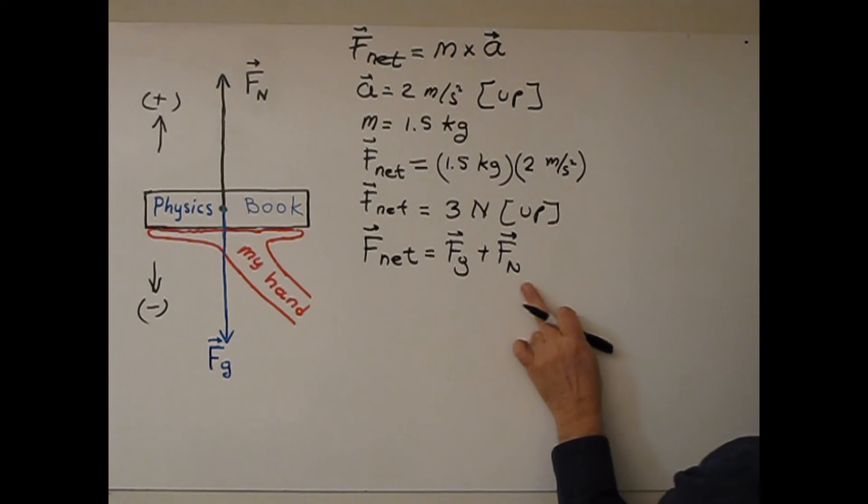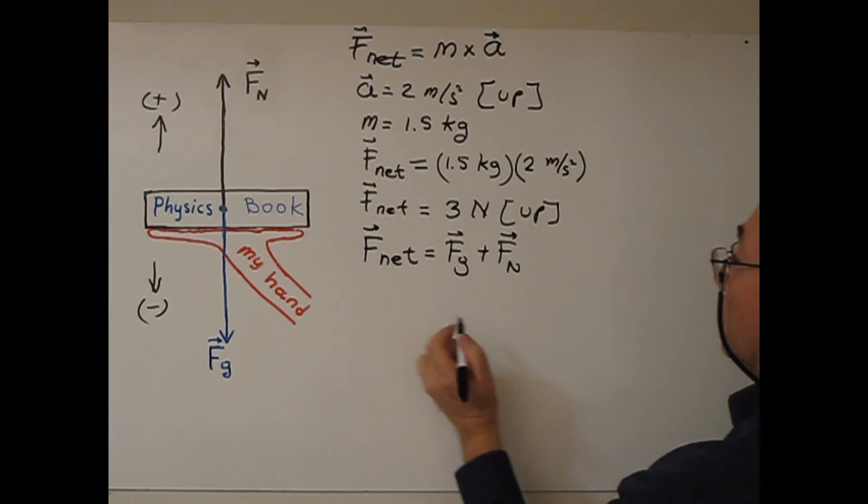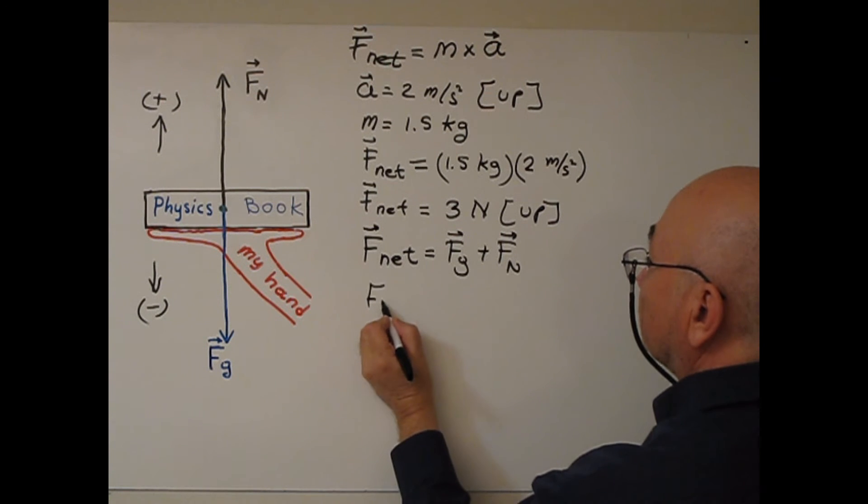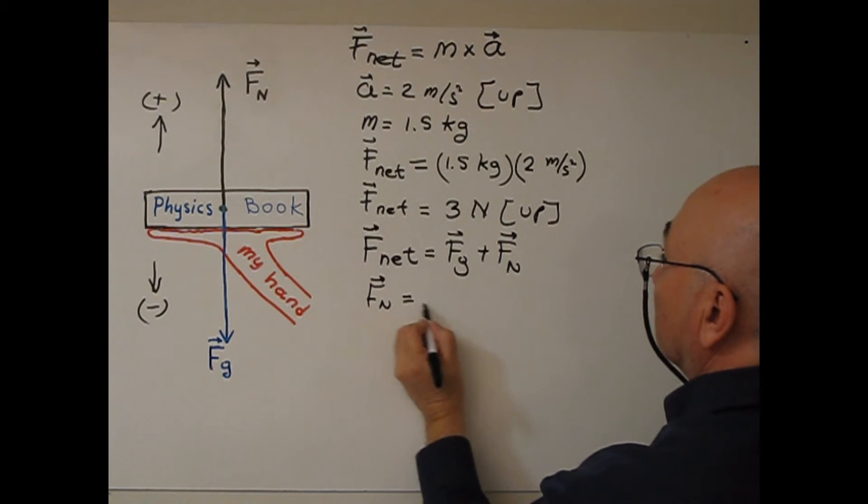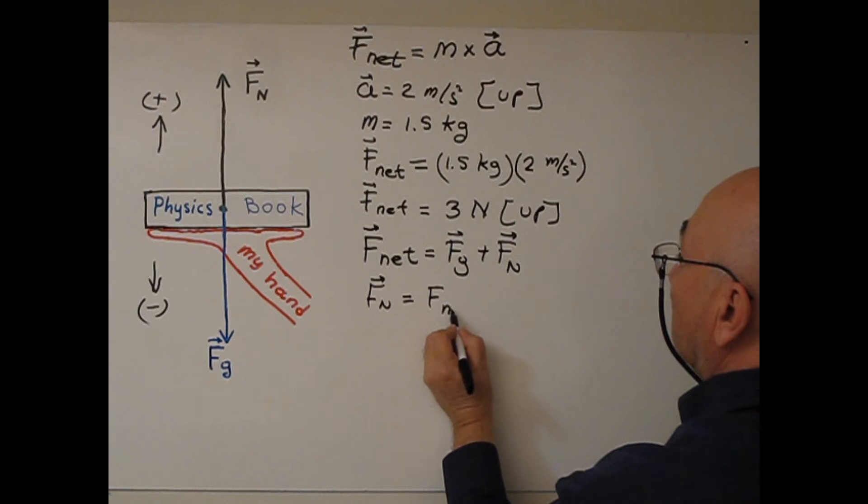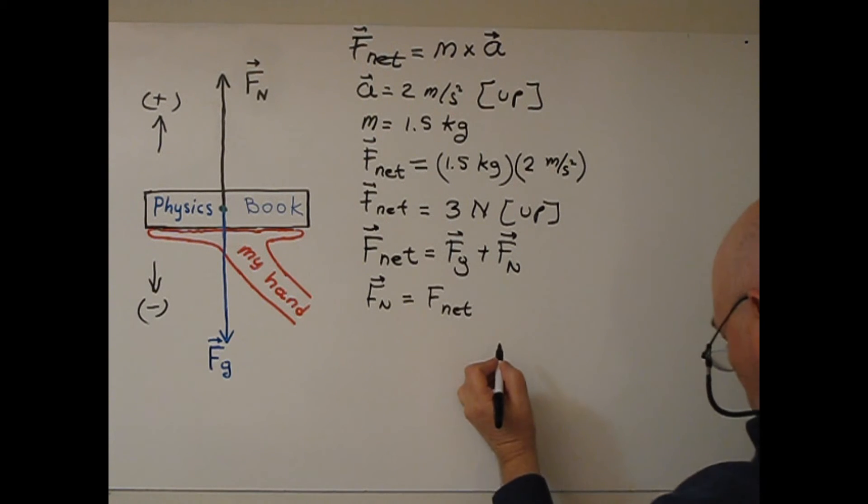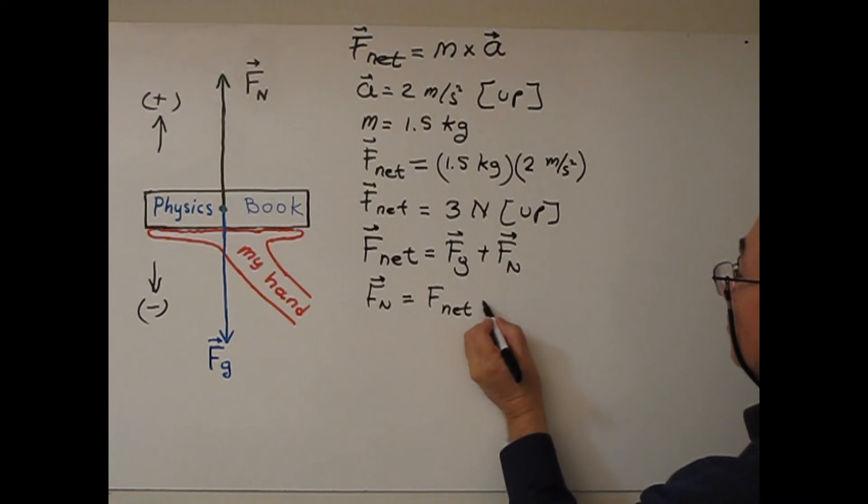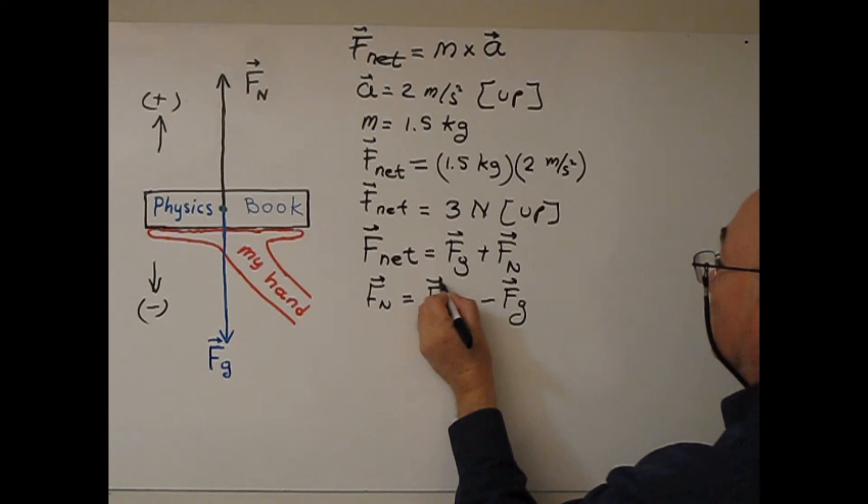So if I isolate F normal, will be equal F net minus Fg.